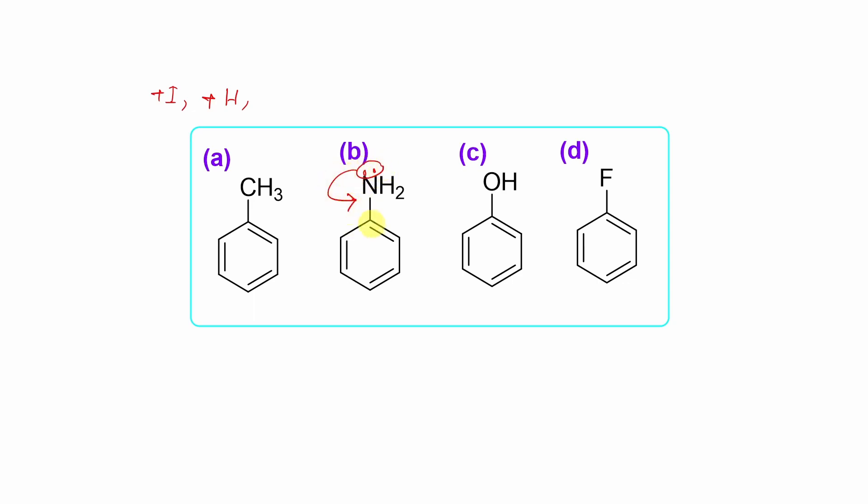Like this nitrogen lone pair could be delocalized here. It could be opened. So one canonical form you can draw: NH2 plus, and the ring is carrying a minus charge. There will be other canonical forms also, I'm not drawing. So in summary, this nitrogen lone pair of this aniline could be delocalized in this benzene nucleus, which will result in increased electron density in the benzene nucleus.